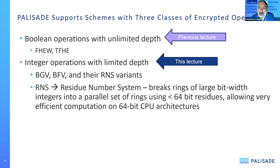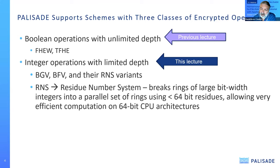RNS means Residue Number System. It's a technique that breaks rings of large bit-width integers into parallel sets of rings that are each less than 64 bits, allowing very efficient computation in 64-bit CPU architectures. It's difficult to work with word sizes on the order of hundreds and thousands of bits on regular CPUs — it becomes more of a data problem than a compute problem. So BGV-RNS and BFV-RNS are versions of these schemes internally optimized to run faster on conventional CPUs.